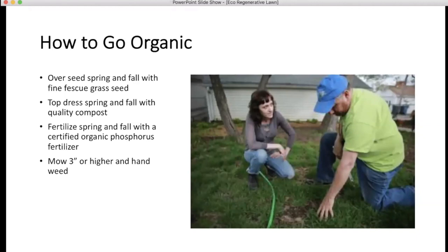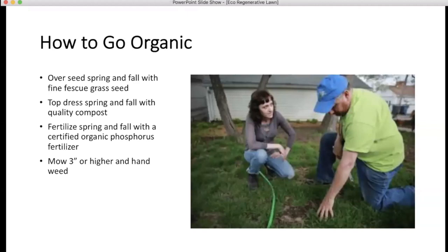We fertilize spring and fall with a certified organic, phosphorus-free fertilizer, and mow at three inches or higher. That mowing height is very important. At three inches or higher, the grass plant doesn't feel threatened, so it puts all of its growth energy into the roots and less into the leaf. If the leaf gets too short, the plant feels threatened, becomes thin, exposes soil, and that's where weed seeds come in. Plus, the three-inch mowing height shades the soil so you use less water.